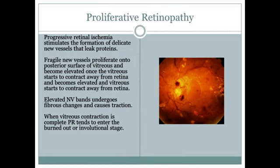The sequence in proliferative retinopathy: ischemia → new vessel formation → leakage into posterior vitreous humor → posterior vitreous separates from retina → fibrosis → traction destroys new vessels → when vessels dry up, the eye is completely burned out. That stage is the involutional stage.